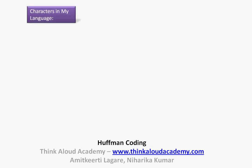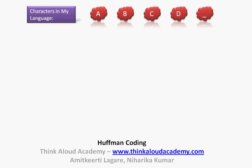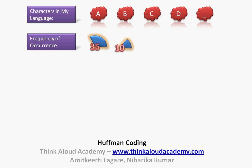Let's assume that I have created a new language and the following are the characters in my language. I just have five alphabets in the language, namely A, B, C, D, and an underscore. Let's assume that I write a novel based on just these five characters. I give this novel to a friend of mine and ask him to find out how many of these alphabets are present in the whole novel. He comes back with the frequency of occurrence of each character: A is present 35% of the time, B is present 10%, C is present 20%, D is present 20%, and the underscore is present 15%.